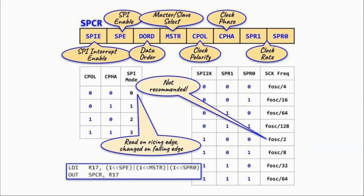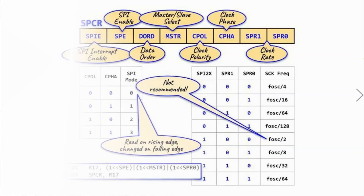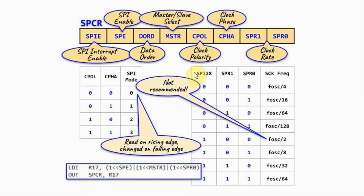Next, we have the SPI control register. One bit will enable the interrupt feature of the SPI. Another bit will enable the SPI itself. Another bit determines the bit movement in the data register — whether we have least significant bit first or most significant bit first. One bit programs the device in either master mode or slave mode. The clock polarity and clock phase bits determine the SPI mode; we have four modes. For example, mode zero has the clock polarity on the rising edge while the change in phase is on the falling edge of the clock. Finally, these two bits combined with the bit in the status register give us eight clock rates.